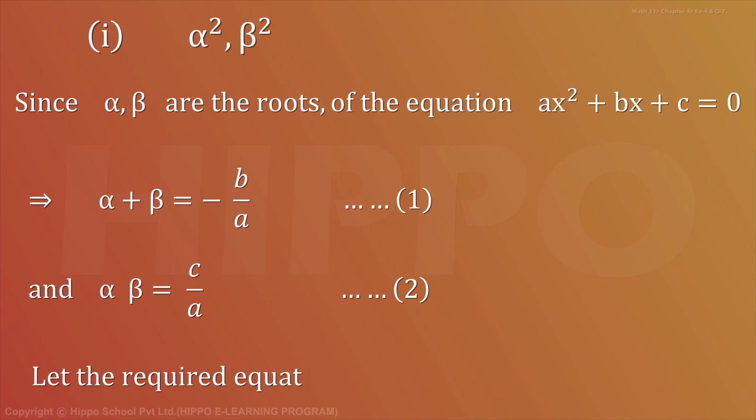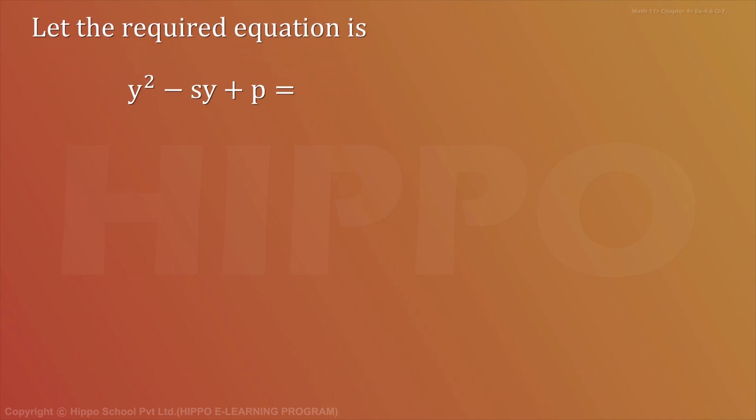Let the required equation is - ہم نے ایک equation form کرنی ہے جس کے roots ہونے چاہیے α² اور β². ہم کہتے ہیں کہ وہ ہمارے پاس equation ہے y² - sy + p = 0, which is equation number 3, whose roots are α² and β².